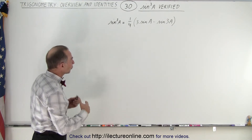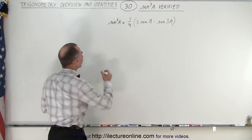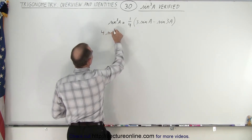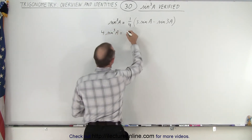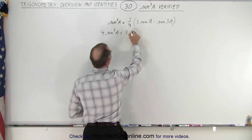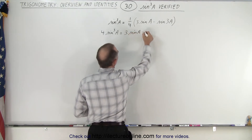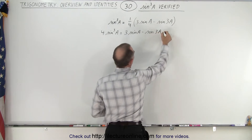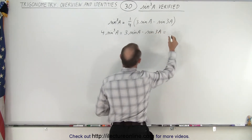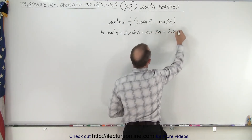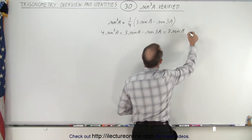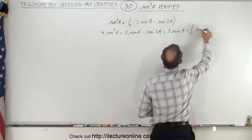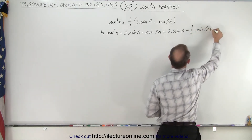So what we're going to do first is multiply both sides by 4. That ends up being 4 times sine cubed of A is equal to 3 times the sine of A minus the sine of 3A. Now we're going to rewrite this as 3 times the sine of A minus the quantity sine of 2A plus A.